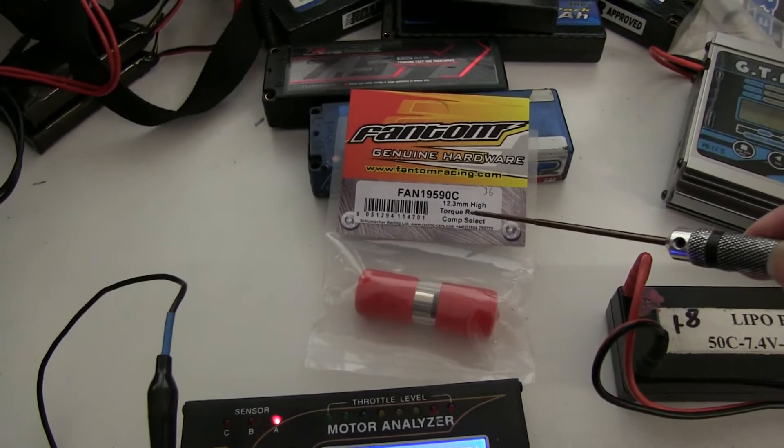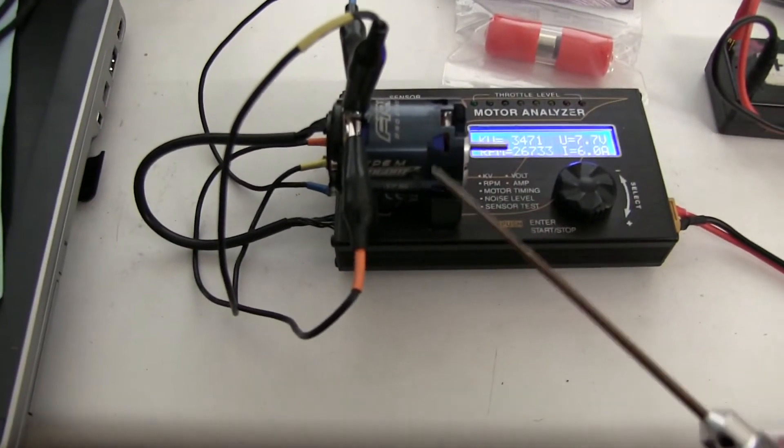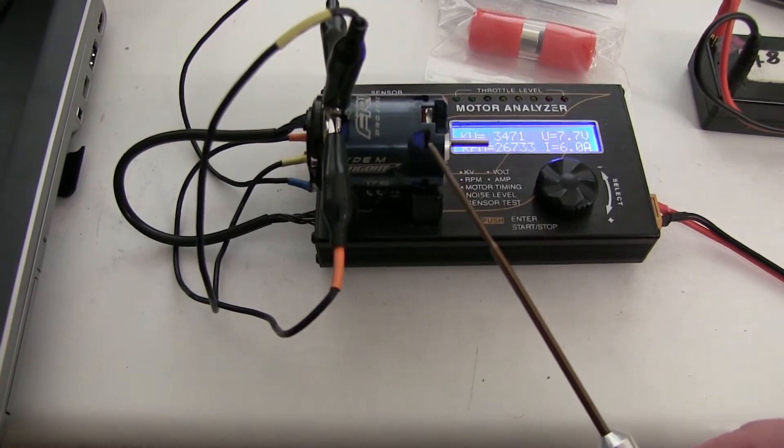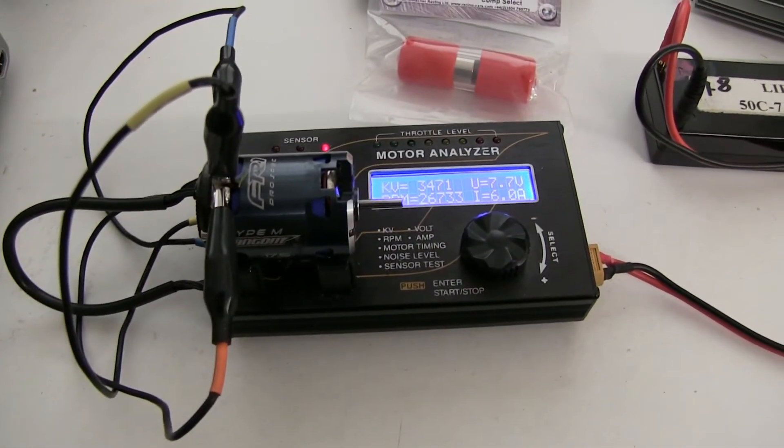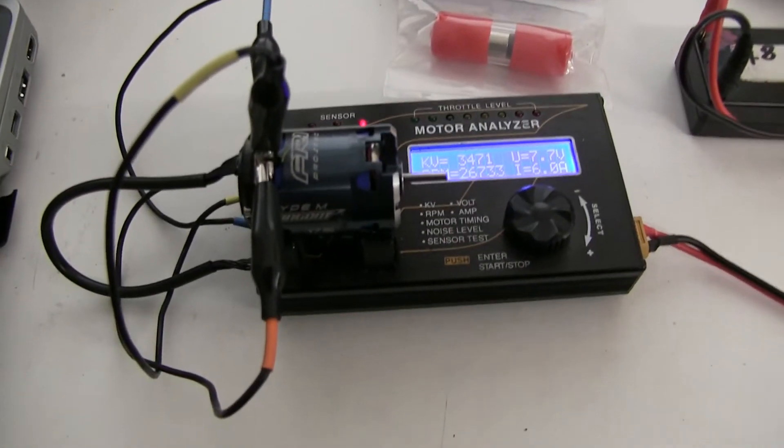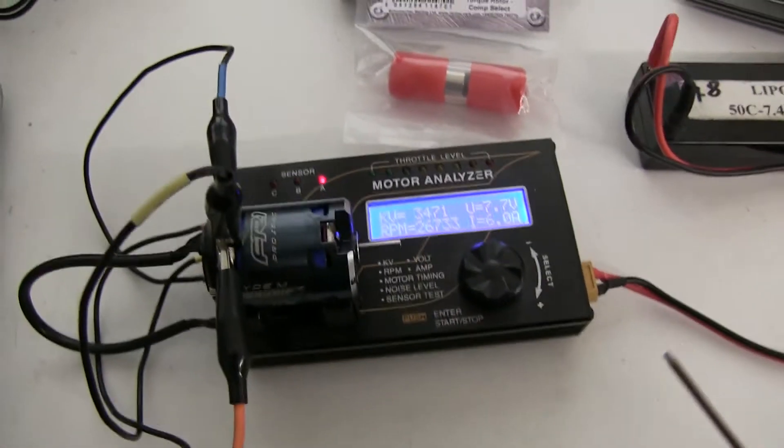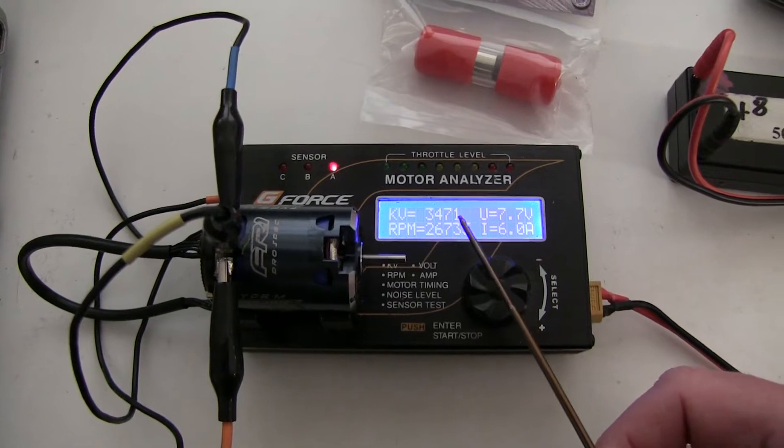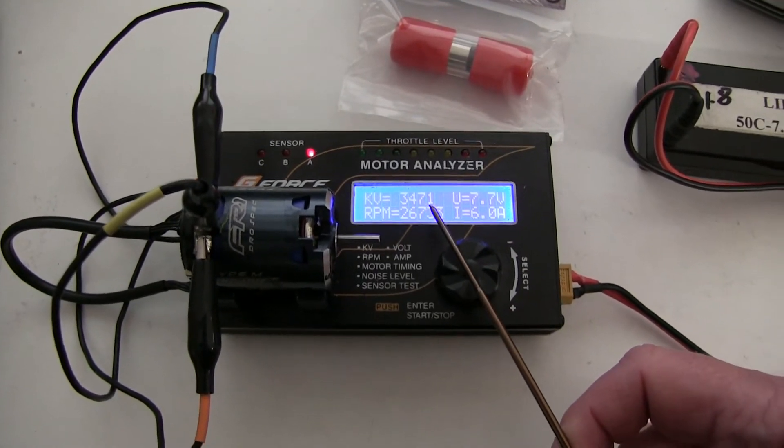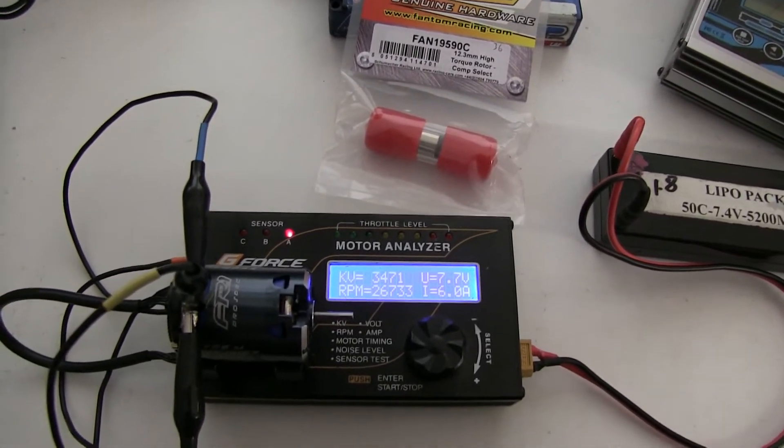Checking out the Phantom optional high-torque rotor 12.3mm that you can put into their motors. These normally come with a 12.45mm rotor, so it would be interesting to see what difference it makes. This is a 17.5mm, the Type M. It's been set up to draw 6A and giving you a nice KV of 3471. Then I'll swap out the rotor and see what it does.